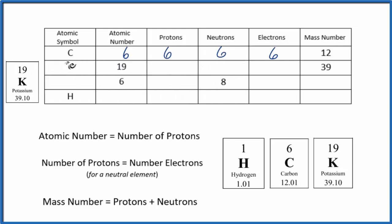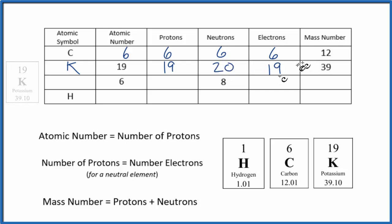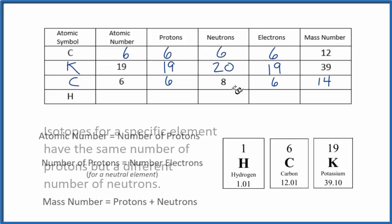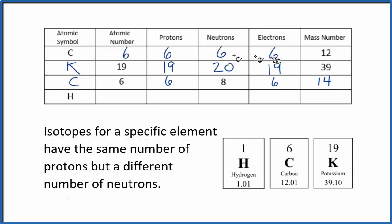Atomic number 19 — looking that up on the periodic table — that's potassium: 19 protons, 19 electrons, and 19 plus 20 gives us 39. Here we have another element with atomic number 6, so that's carbon again: 6 protons, 6 electrons. But 6 plus 8 gives us a mass number of 14. So we have two versions of carbon — one with 6 neutrons and one with 8. That makes these isotopes of carbon.